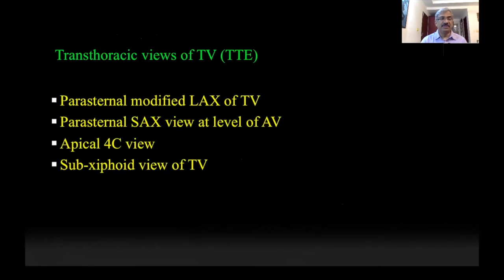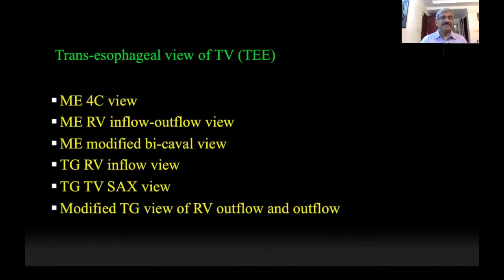The transthoracic views normally used include the parasternal modified long axis view of the tricuspid valve, the parasternal short axis view with the aorta at the center showing the RV inflow and outflow, the apical four chamber view, and the subcostal view. For transesophageal echocardiography, the views of interest are the mid-esophageal and transgastric views, including the mid-esophageal four chamber view, the mid-esophageal RV inflow-outflow view, the modified bicaval view, and the transgastric short axis view of the tricuspid valve as well as the RV inflow view.